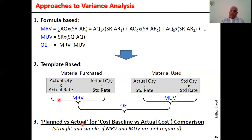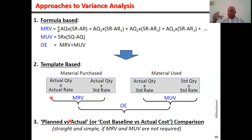The third is a simplistic approach where we just compare what was planned with what has actually happened through logical calculation and arrive at the same result. We will now take one example each for material and labor and work through all three methods.